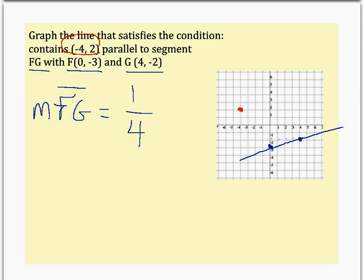Now, the key to this problem is I was told that the lines are parallel to each other. So if FG has a slope of 1 over 4,